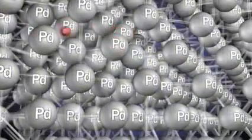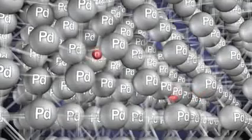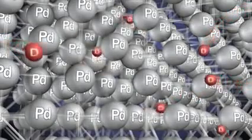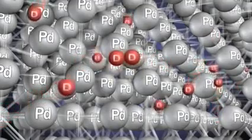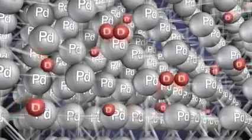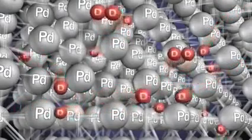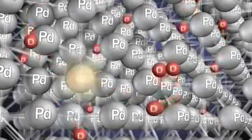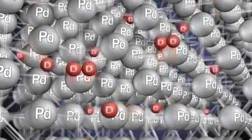Some deuterium atoms work their way into the lattice by popping through the interatomic sites within the lattice. Other deuterium atoms bump into each other along the surface of the palladium cathode and form a D2 molecule that's too big to enter the lattice. These D2 molecules cluster to form bubbles that rise up in the electrolyte solution.